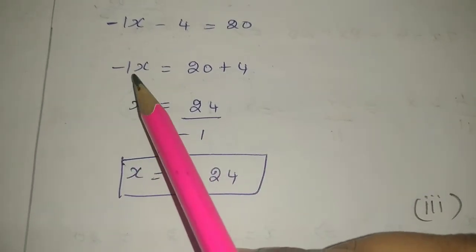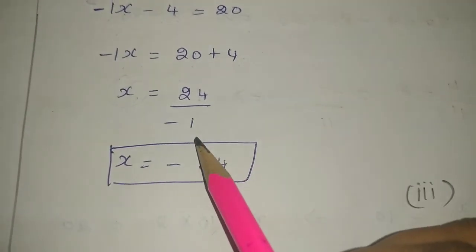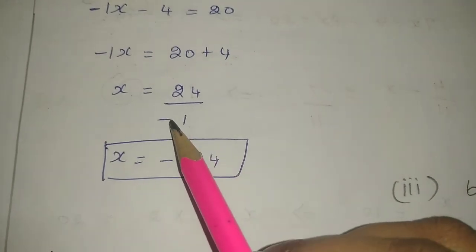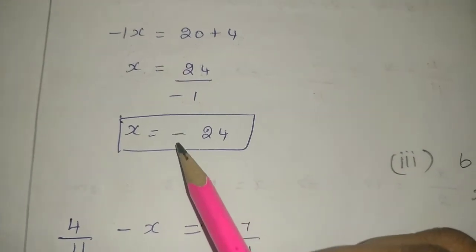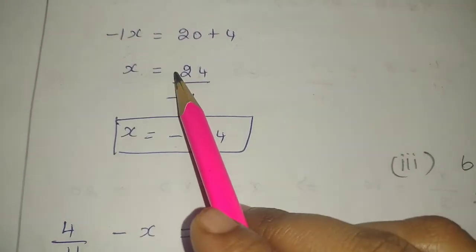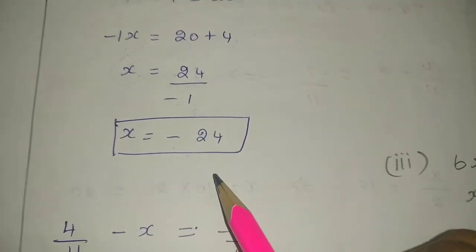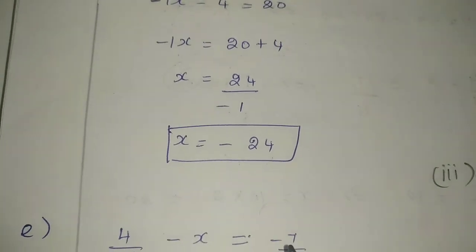We can do x here also. Minus 1 is multiplication, so opposite side is division through transposition. In the numerator minus, in denominator minus. 24 by 1 is 24, so the answer is minus 24. x equals minus 24.